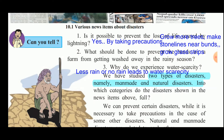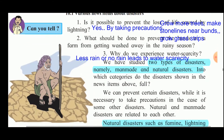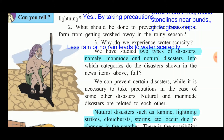Why do we experience water scarcity? Water scarcity is experienced due to less rain or no rain. We have also studied that there are two types of disasters: manmade and natural. Natural disasters occur naturally, while manmade disasters occur due to human beings or their carelessness.